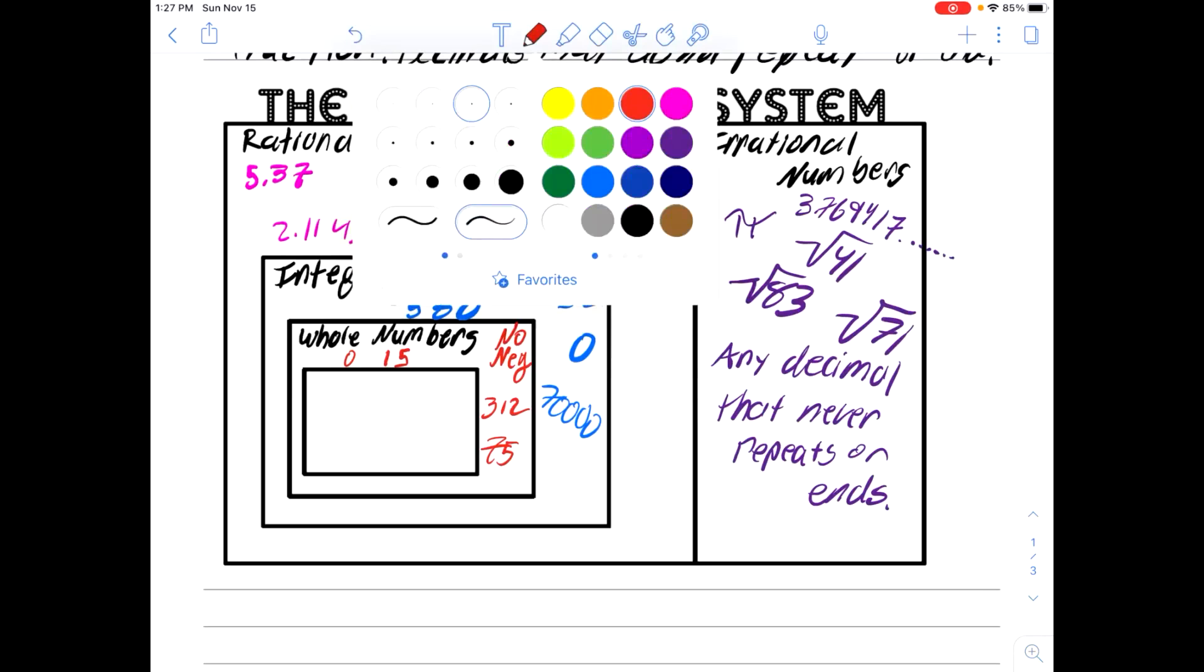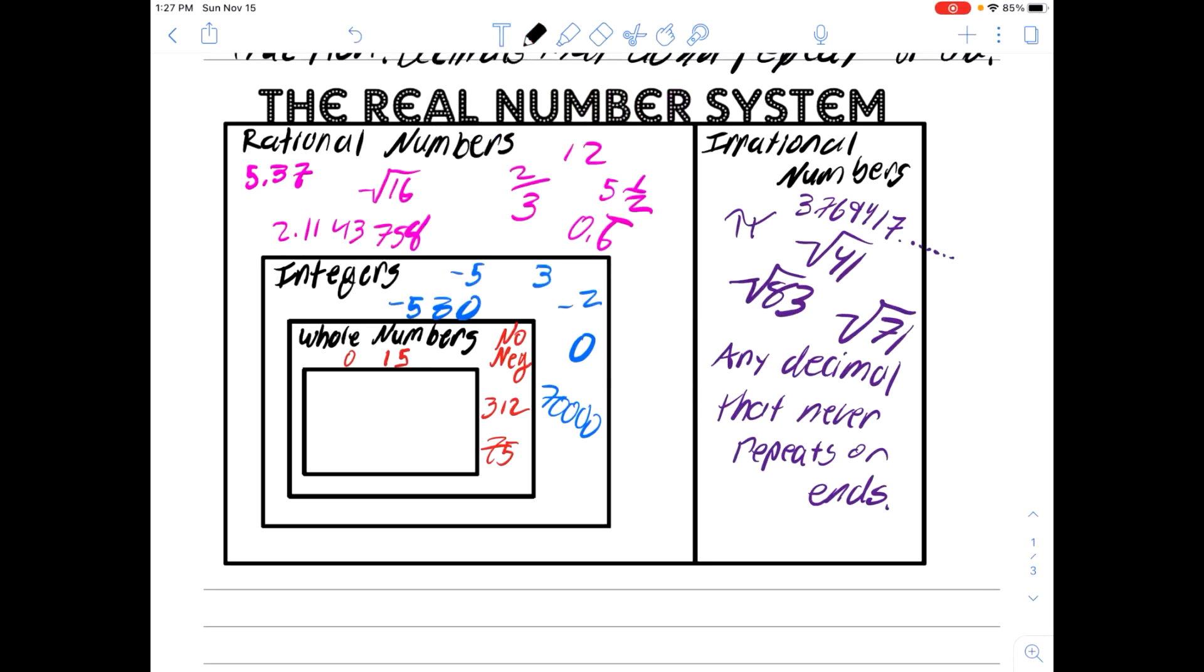And then the last classification is the natural numbers. Natural numbers are even stricter. They say basically no 0. So not only are they not allowing negatives still, they also don't allow 0. Anything else that's a whole number is a natural number. Natural numbers are also your counting numbers. When you start counting, they go 1, 2, 3, 4, 5. So all positive whole numbers: 2, 12, 11, 75,000, 133, but not 0.